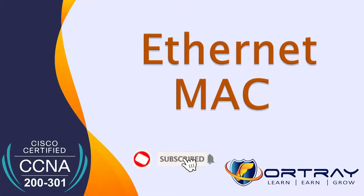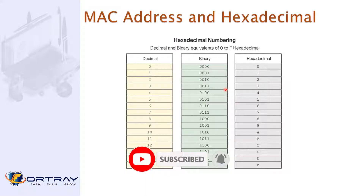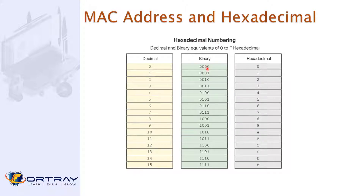A MAC address is written in hexadecimal format. Now we know the IP address is defined as an octet in decimal format, sometimes also in binary format. This is just to give you an idea about hexadecimal — most likely the MAC address is written in hexadecimal format, while IP addresses are written in decimal format, and sometimes in binary format.